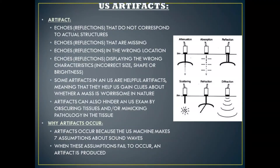In ultrasound, artifacts are echoes that do not correspond to actual structures, echoes that are missing, echoes that are in the wrong location, or echoes displaying the wrong characteristics such as incorrect size, shape, or brightness. Artifacts occur because the ultrasound machine makes seven assumptions about sound waves. When one or more of these assumptions fail to occur, an ultrasound artifact is produced.